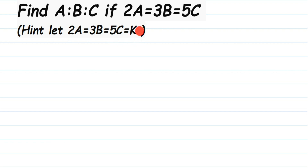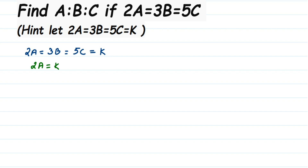So in the question they have given 2A equals 3B equals 5C equals K. If they are all equal to K, that means individually 2A equals K, 3B equals K, and 5C equals K. I'm going to use that and get the value of A first. So 2A equals K — transposing 2 to the other side, A will be equal to K divided by 2.